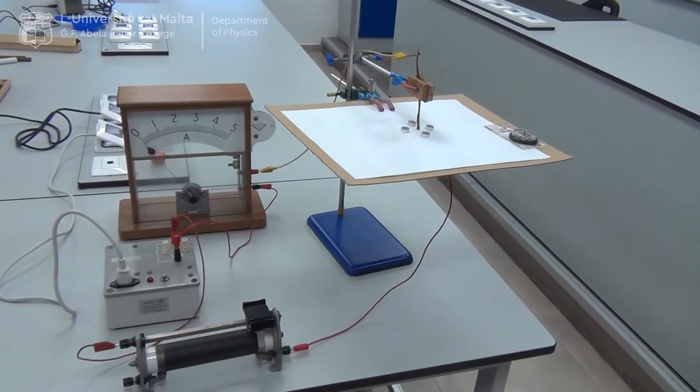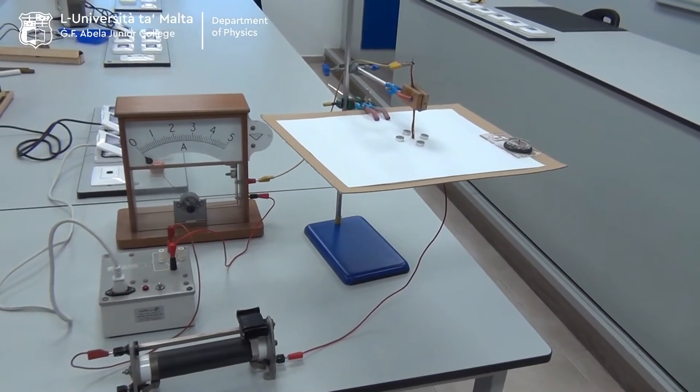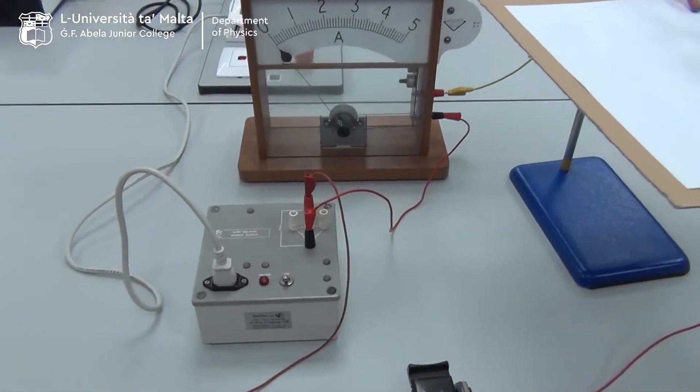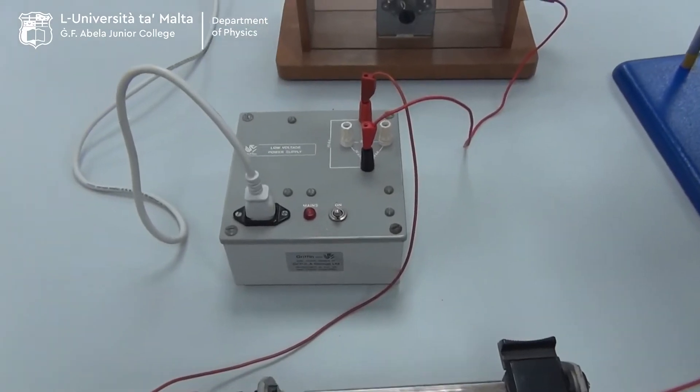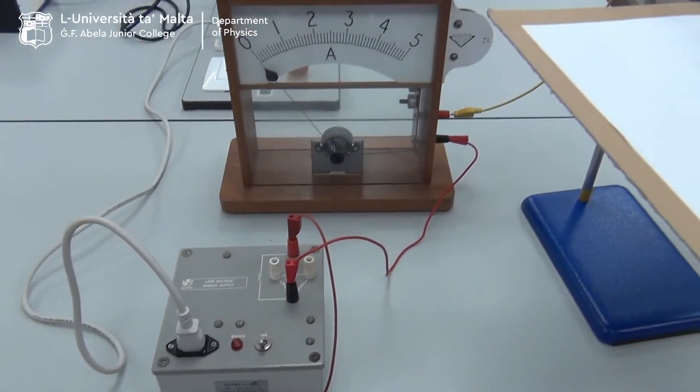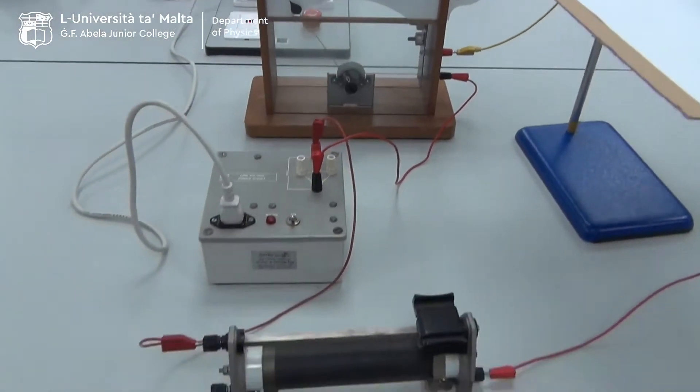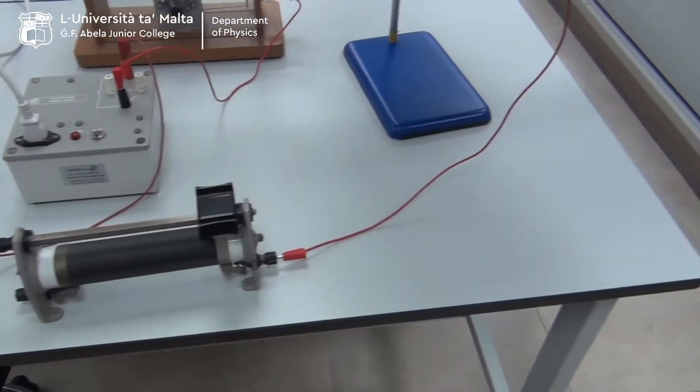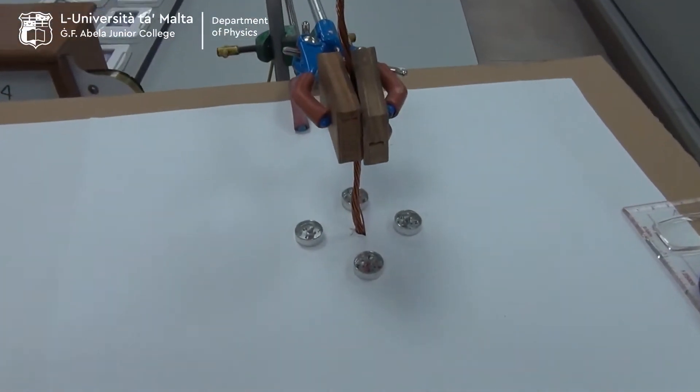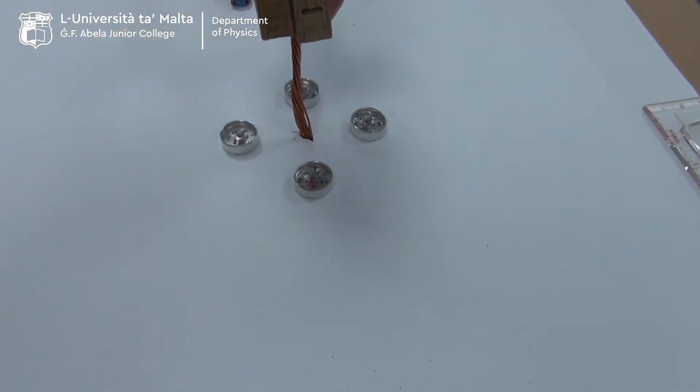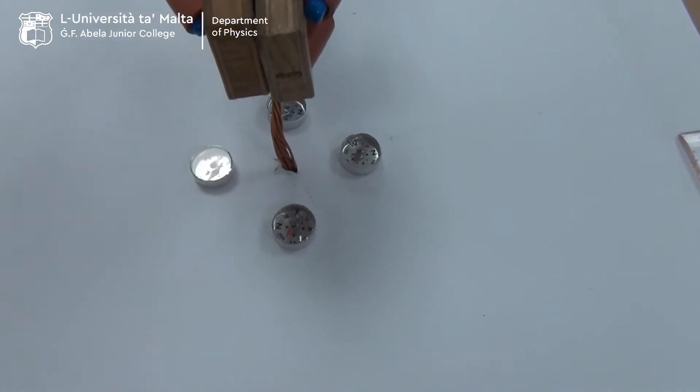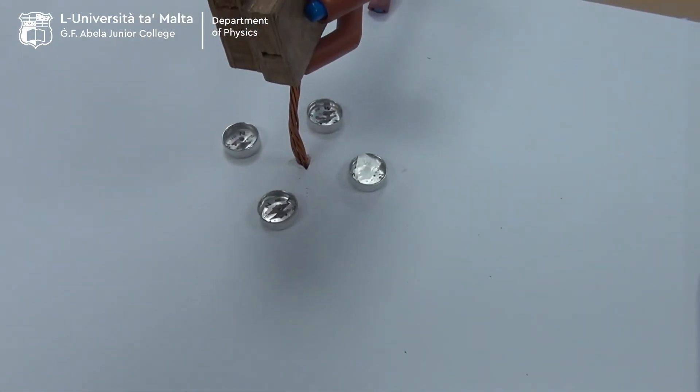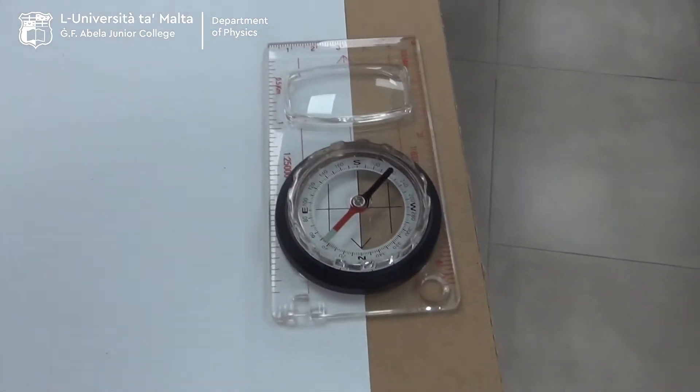In this demonstration we shall see the effect of an electric current causing magnetic fields. For this experiment we use a power supply and a meter to show the current, a variable resistor to control the current, and this is the wire with compass needles around. The compass needles in their normal way should point to the north, to the geographical north as indicated by this other compass needle.